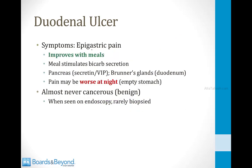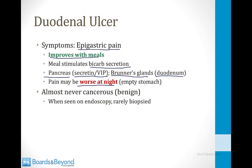The symptoms of a duodenal ulcer are epigastric pain that typically improves with meals. This is because meals stimulate bicarbonate secretion — the hormones secretin and VIP stimulate the pancreas to release bicarb, and Brunner's glands in the duodenum also secrete bicarb in response to a meal. When bicarb is released, it temporarily raises the pH in the duodenum and alleviates pain. Pain may be worse at night, when the stomach is empty and the ulcer is bathed in acid.